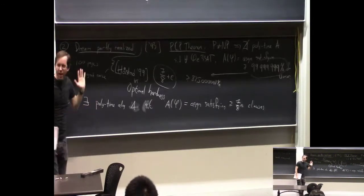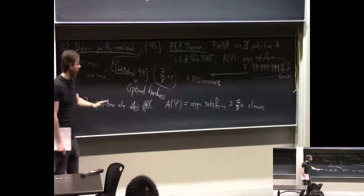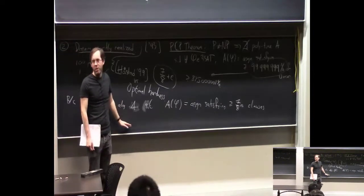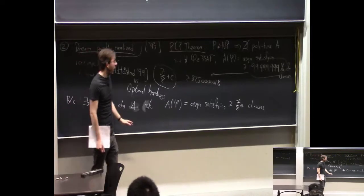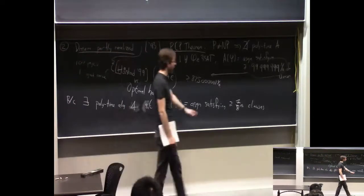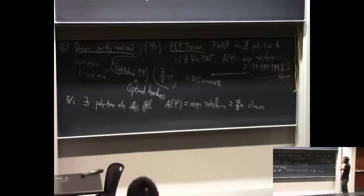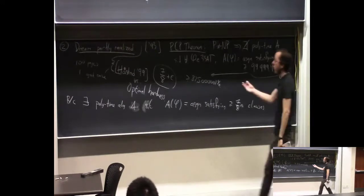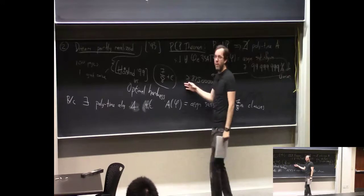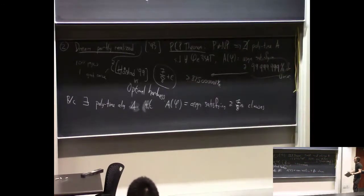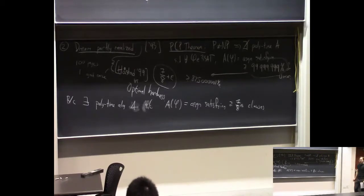This is actually kind of amazing: the dumbest possible algorithm in the world — just choose a random assignment — gets you 7/8 · M of the clauses in expectation, and you can get it always. Then Håstad's cool result says there's no polynomial time algorithm with a better guarantee than that. So if you're talking about the worst case over all φ's, you may as well just use the dumbest possible algorithm. It's kind of amazing.